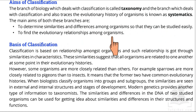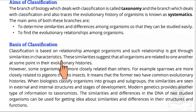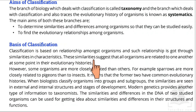Another aim is to find the evolutionary relationships among organisms — what changes have occurred between organisms over time, and what are the similarities and differences. The basis of classification is the relationship among organisms, and such a relationship is established through similarities in characteristics. These similarities suggest that all organisms are related to one another at some point in evolutionary history.